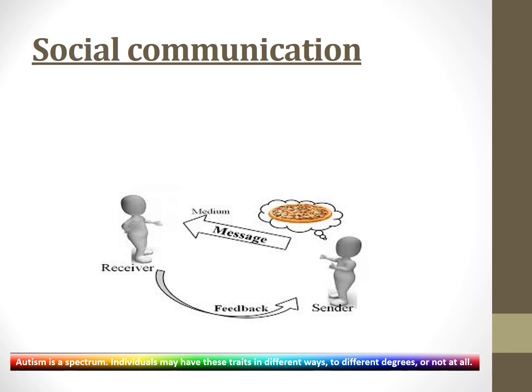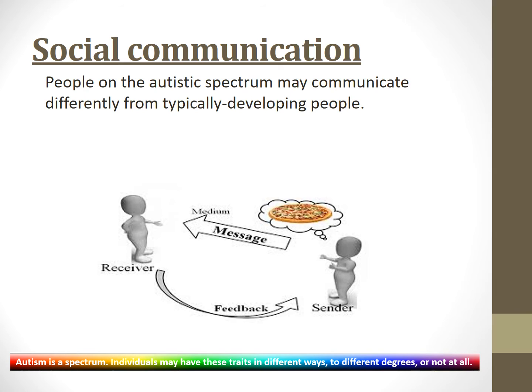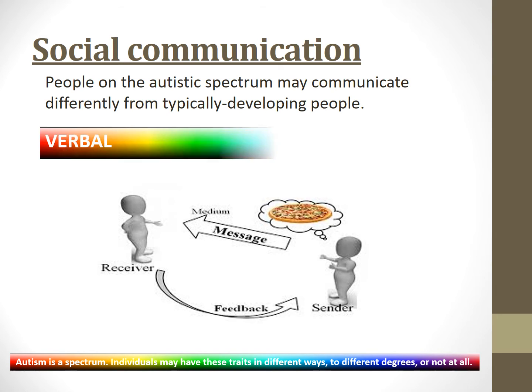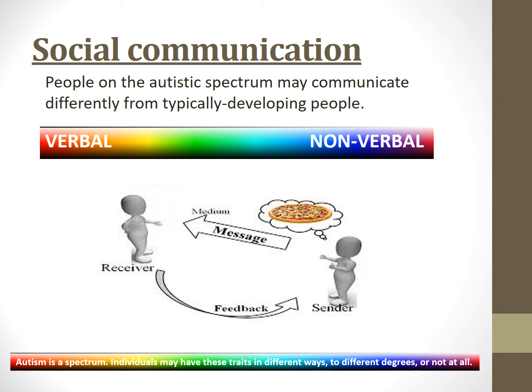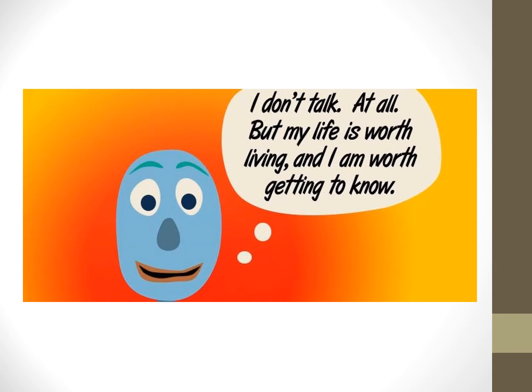From here on in this talk you'll see a strip across the bottom of each slide that says: autism is a spectrum — individuals may have these traits in different ways, to different degrees, or not at all. So, social communication: people on the autistic spectrum may communicate differently from typically developing people, on a range from verbal to non-verbal means. Some autistic people don't talk at all, but that doesn't mean that they don't communicate.